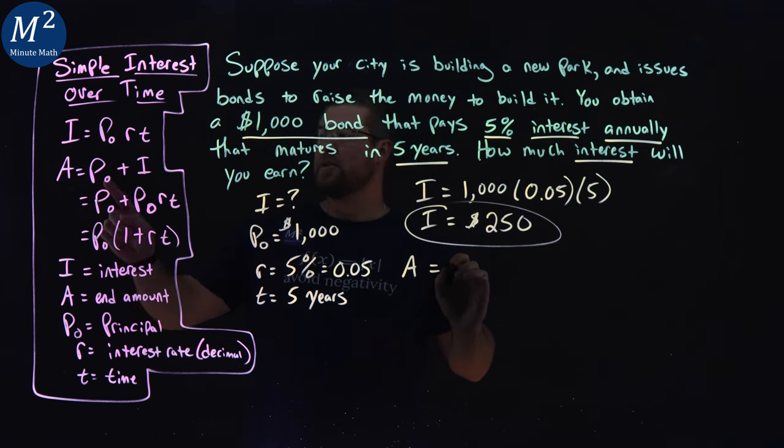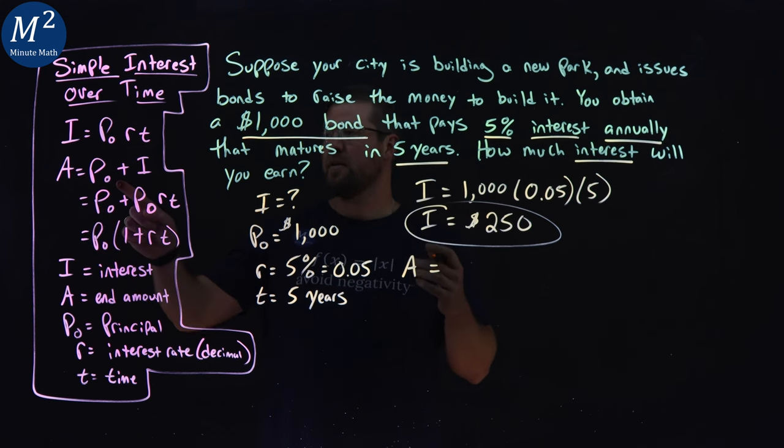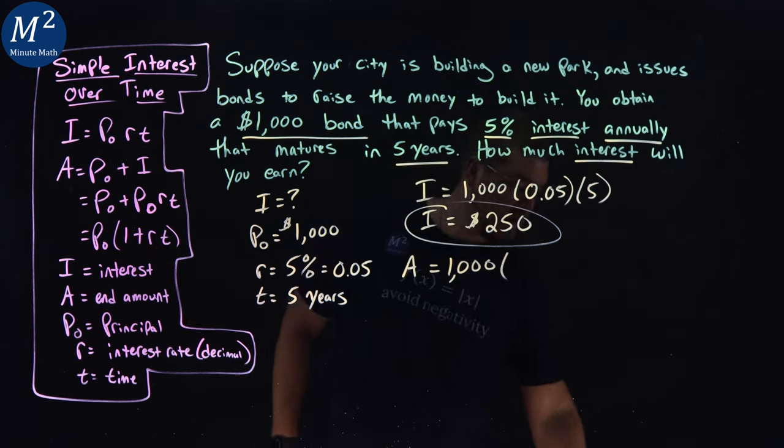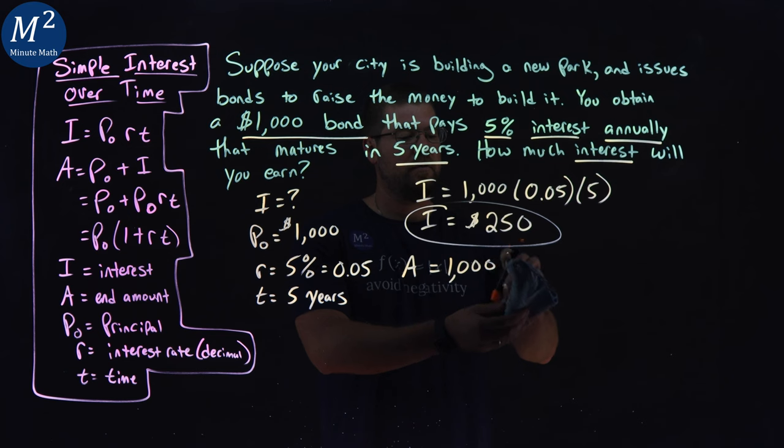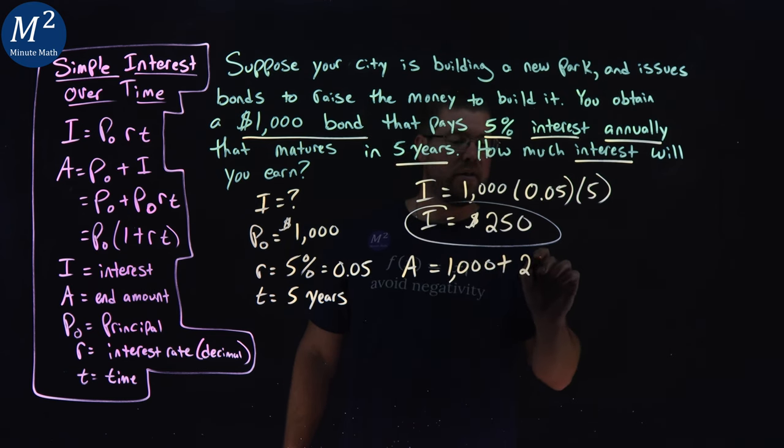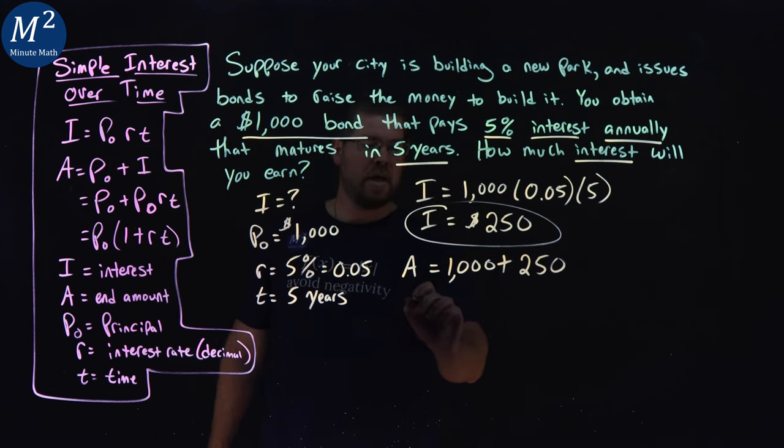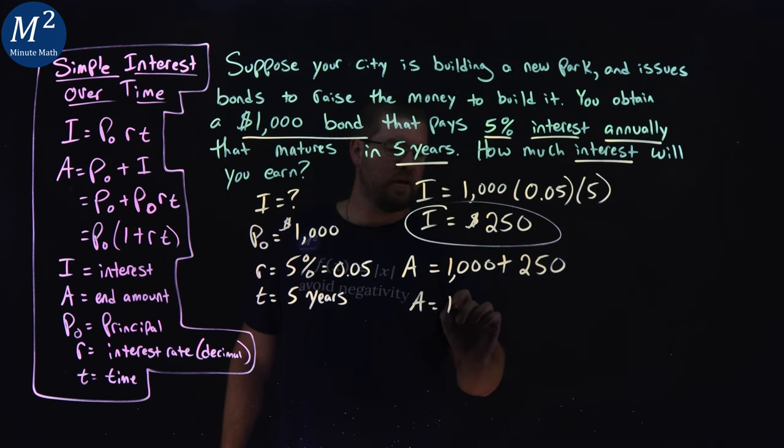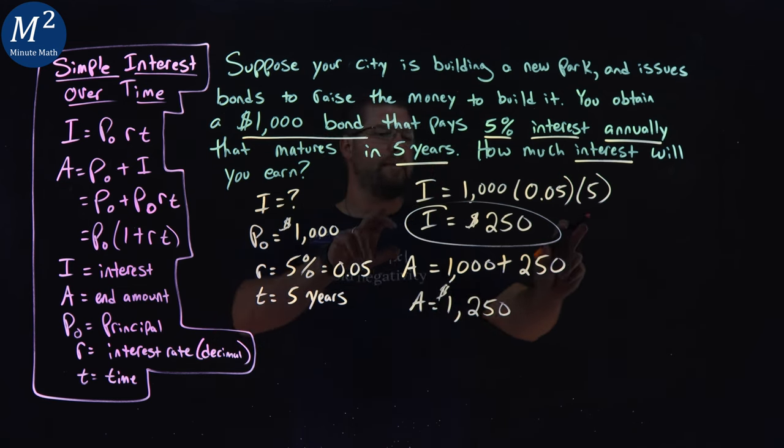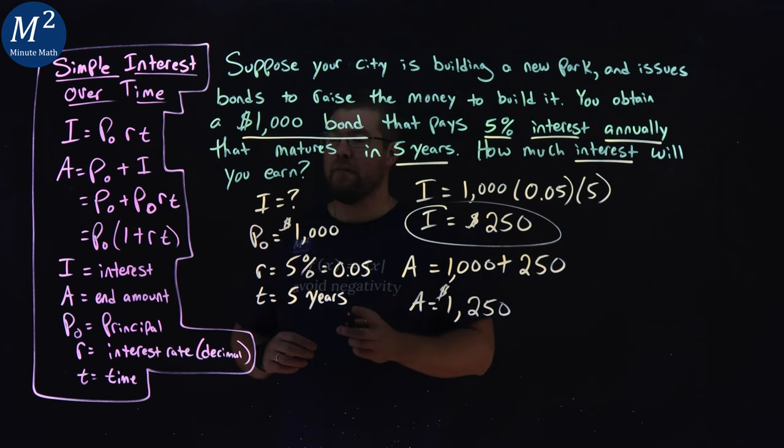Our amount is our initial. So our end amount total that we've accumulated is our initial amount, $1,000, plus our I, excuse me, plus our interest amount, which was $250. And that gives a total end amount value of $1,250. If the question asks something like that, that would be your answer, just so you know it. But here, the interest was just $250.